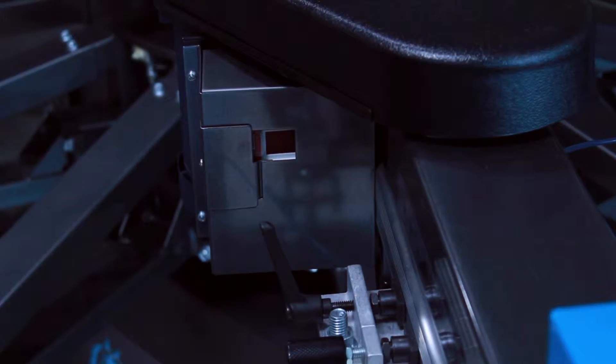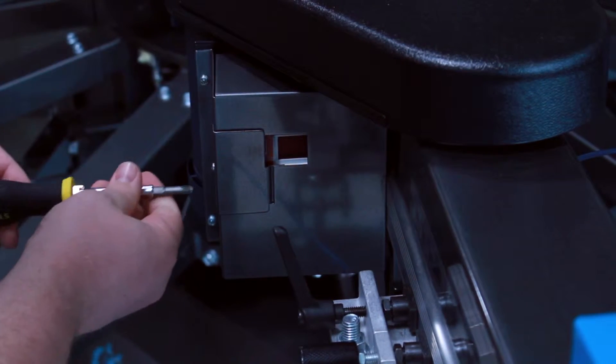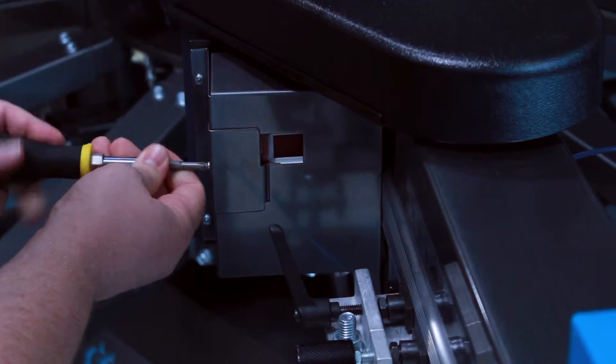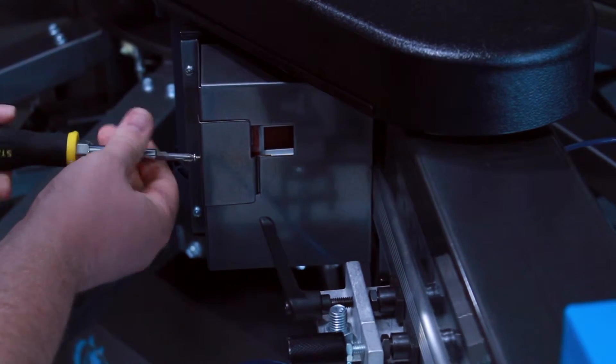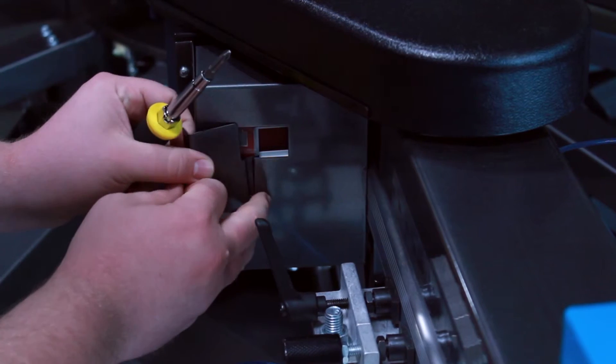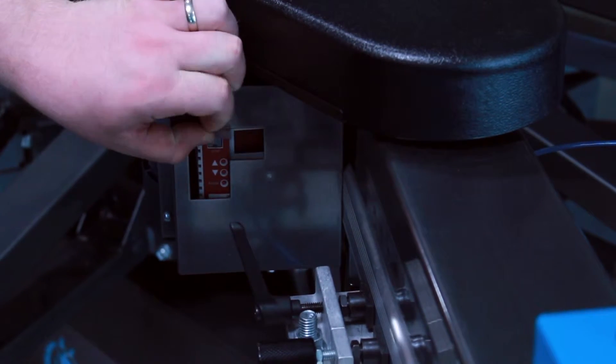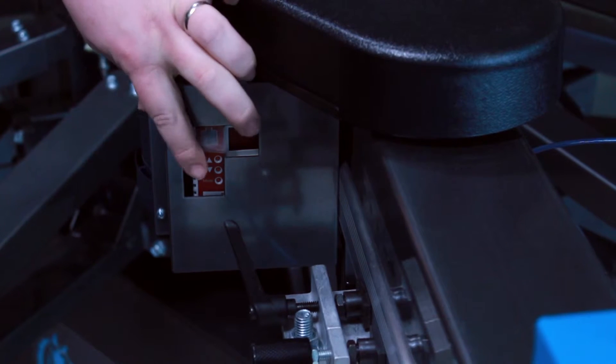The first step is to remove the trap door in front of the EEPROM with a Phillips head screwdriver. Once you've removed the trap door, lift up the tape that's in front of the EEPROM.